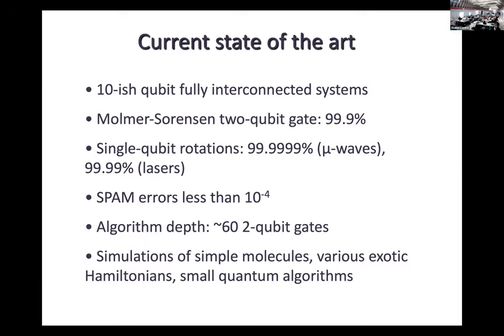This is a trapped ion system. I will not talk about qubits and how they work — you'll hear about it later. At the moment, trapped ion quantum computers are on par with the other technology that is more popular in the industry. We're somewhere on the level of 10 qubits that are fully interconnected — each qubit can talk to every other qubit. The gate fidelity is rather high: many nines for single qubit operations and three nines for two-qubit gates. These are actual numbers from experiments.